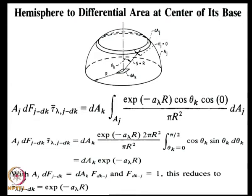The mean beam length is the radius of that fictitious hemispherical enclosure — that is, the length scale which, when used in the formula τ = e^{-aR}, gives you the same transmittance as the actual more complicated expression. So you are replacing the real geometry with an equivalent hemispherical geometry. Mean beam length is the radius of that fictitious hemispherical enclosure which gives the same transmittance as the real geometry you are dealing with, whether it is cylindrical, rectangular, or something else. This is of course an approximation, so there is bound to be some error.